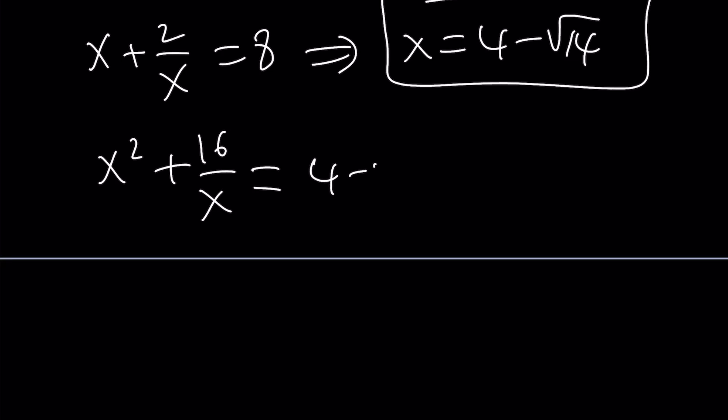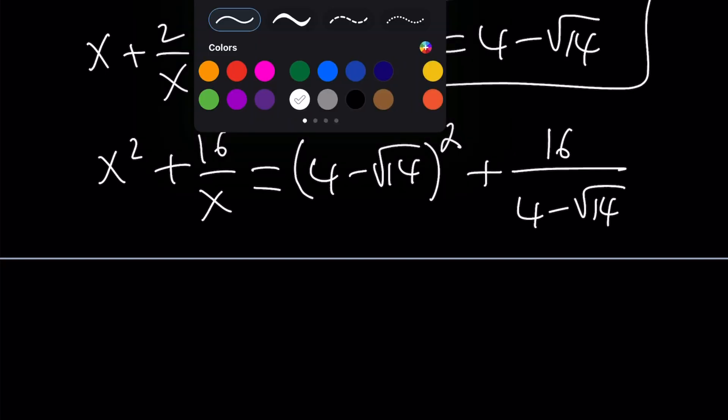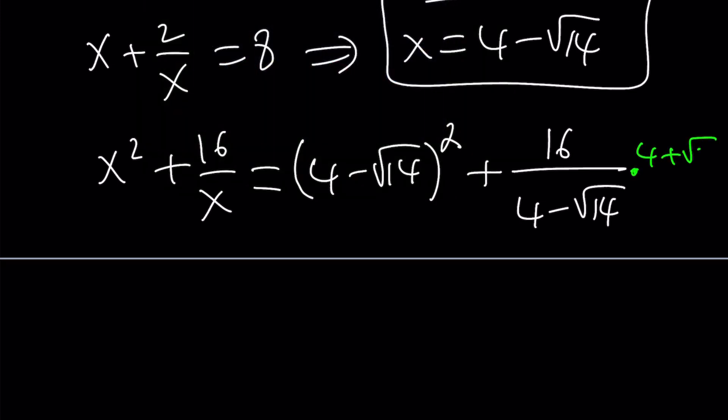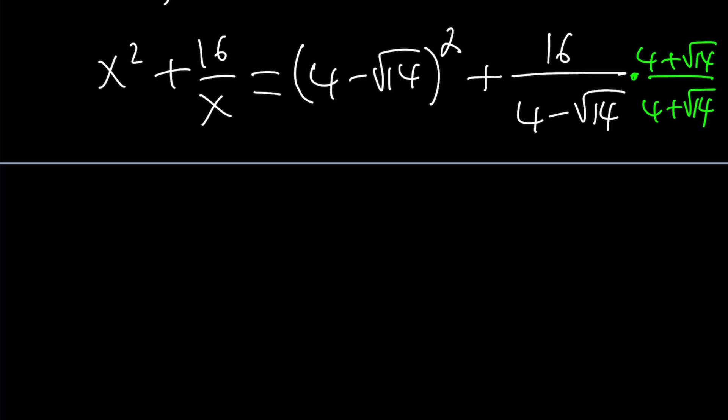Let's do it. Obviously, I need to take 4 minus root 14 and I need to square it plus 16 divided by that. Now, here we need to rationalize the denominator. So let's go ahead and multiply the top and the bottom by the conjugate: 4 plus root 14 and 4 plus root 14. Great. Now, we're going to simplify this expression. Let's go ahead and square this expression. a minus b squared, as you know, is a squared minus 2ab plus b squared. Right? And then plus. Now, let's see what's going to happen here. When you multiply these two things, you're going to get from difference of two squares, 16 minus 14, which is 2.